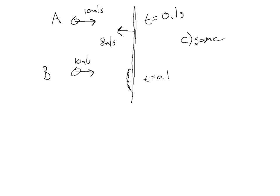The ball that experiences the greatest change in momentum is Ball A. Remember, momentum is a vector. If Ball A is going 10 meters per second to the right and then bounces off the wall going 8 meters per second to the left, that's a bigger change than Ball B, which was going 10 meters per second to the right and then stops. Let's show that with numbers.